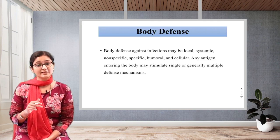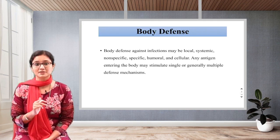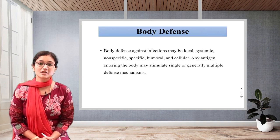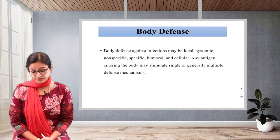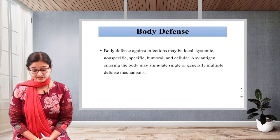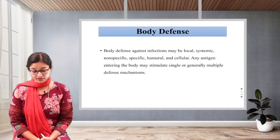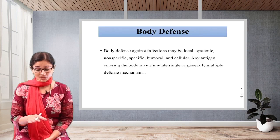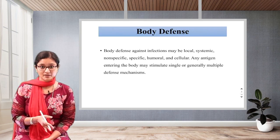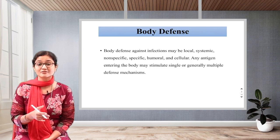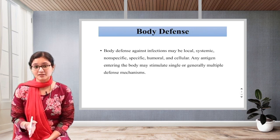Next time when the same antigen comes into our body, they remember it. So it is a very nice mechanism. Body defense against infections may be local, systemic, nonspecific, specific, humoral, and cellular. Our body's defense against various infections can be at these different levels — at local level, for example, if you get hurt and there is a cut, it starts to heal nicely.